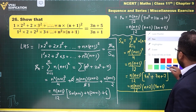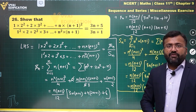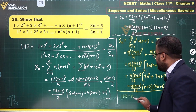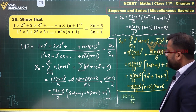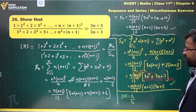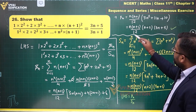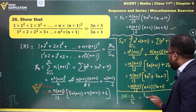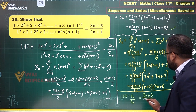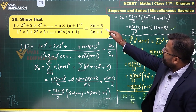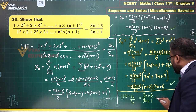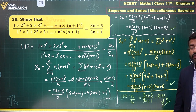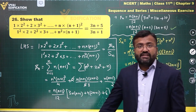Now we have both small sn and capital Sn. Therefore, LHS = small sn / capital Sn = [n(n+1)/12 · (n+2)(3n+5)] / [n(n+1)/12 · (n+2)(3n+1)]. The n(n+1)/12 and (n+2) cancel out, and what remains is (3n+5)/(3n+1) — which is exactly what we wanted to prove. That's the complete proof for question number 26.